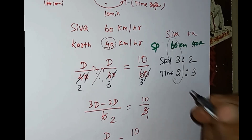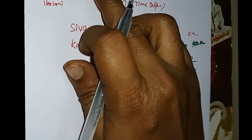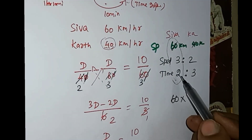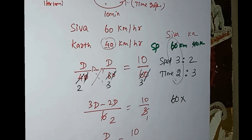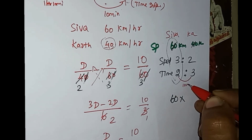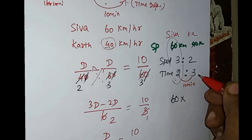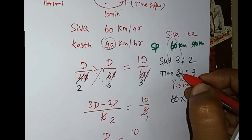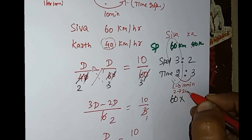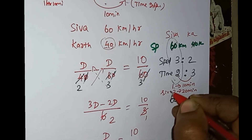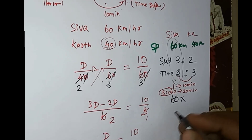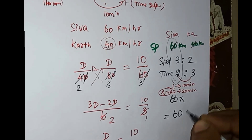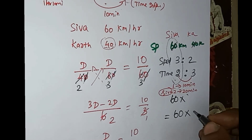Using Distance equals Speed into Time: Shiva's speed is 60 km. The time difference is 10 minutes. That difference is 1 part, so 1 part equals 10 minutes, meaning 2 parts equals 20 minutes. With Shiva's speed at 60 km per hour and time 20 minutes, we can calculate the distance.